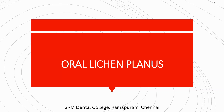Oral lichen planus - 'oral' means it is seen in the oral cavity, and 'planus' means flat, like a patch or linear lesion. Oral lichen planus is defined as a chronic autoimmune mucocutaneous disease affecting the oral mucosa, the skin, the genital mucosa, scalp, and the nails.